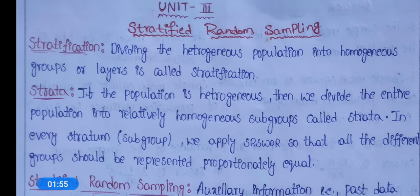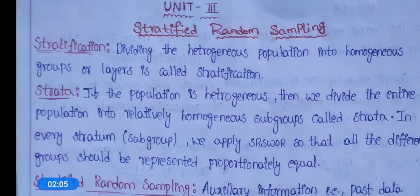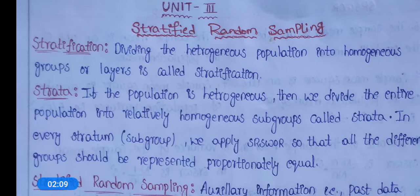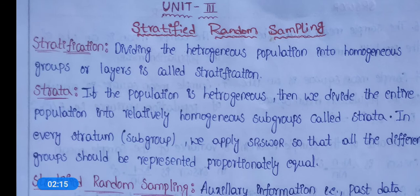Let us now look at Unit 3: Stratified Random Sampling. Stratification is dividing the heterogeneous population into homogeneous groups or layers; this process is called stratification.